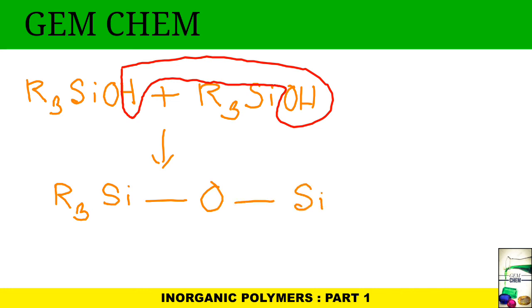Ultimately we get here one O, then SiR3, and this is known as siloxane. Now we are going to deal with some different things which are important to know in case of inorganic polymers.